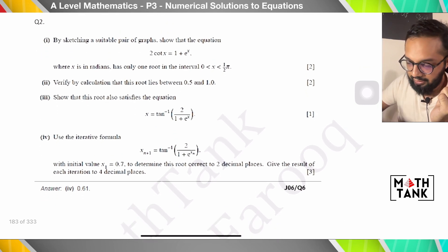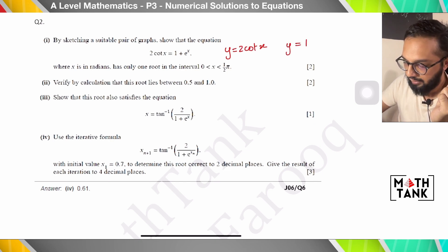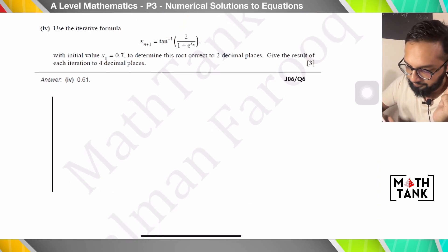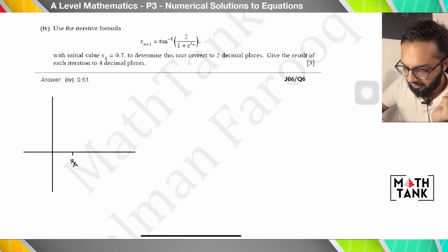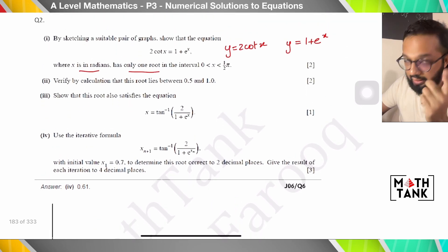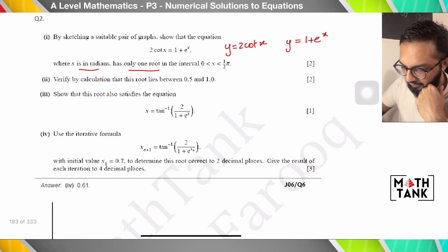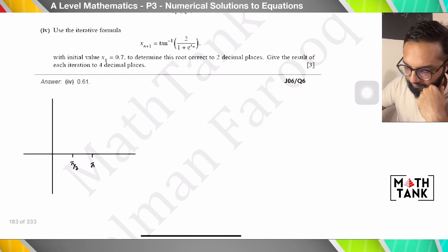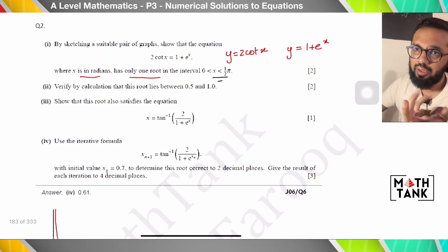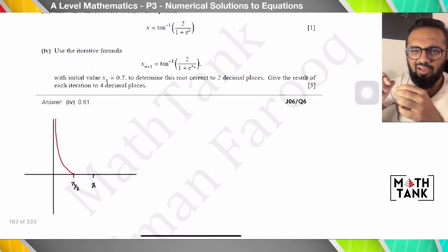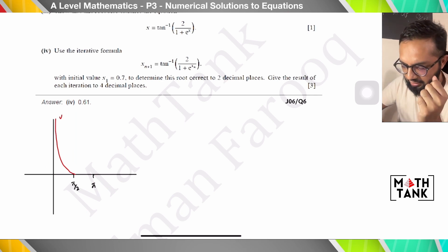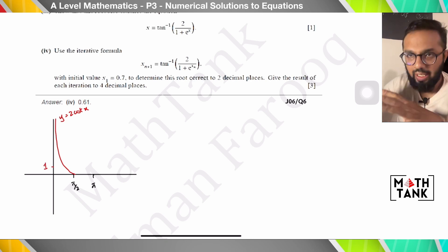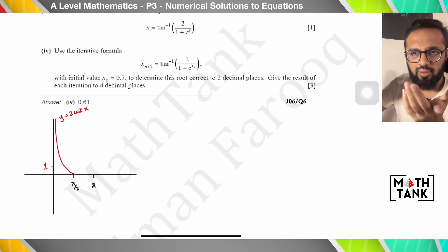Question 2: by sketching a suitable pair of graphs, show that the equation 2 cot x = 1 + eˣ — where x is in radians — has only one root in the interval. The graph of cot x in (0, π/2) goes to infinity near 0, then down. Multiplying by 2 just stretches it — the value at 45° becomes 2 instead of 1, but that's not something to worry about on the exam.